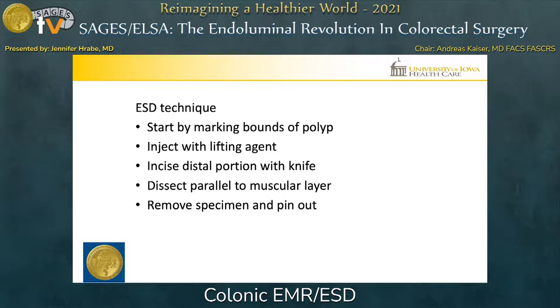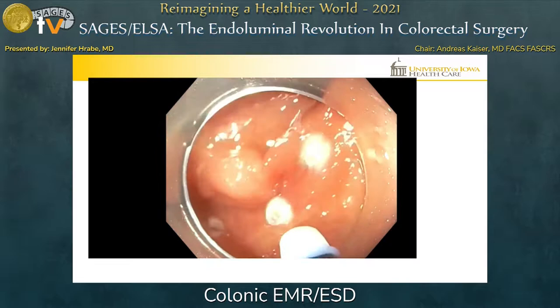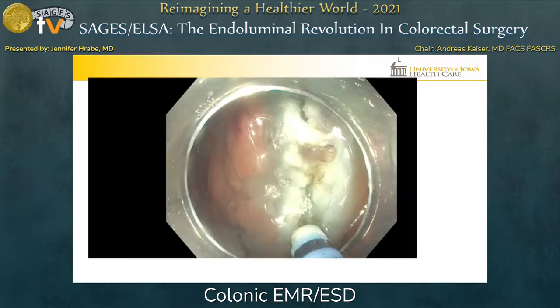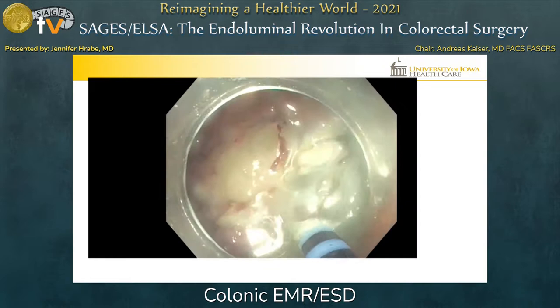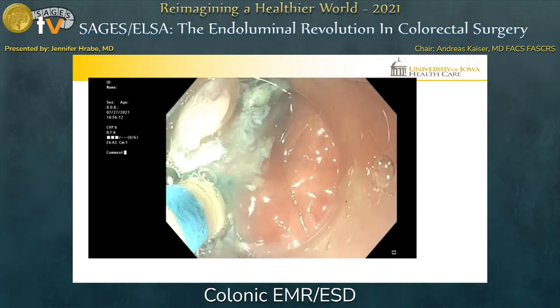This video demonstrates critical portions of the performance of ESD. We start by marking with cautery the bounds of the polyp to be excised. Then the incision is made with the knife, and the dissection continues in the submucosal plane. The distal attachment cap helps provide traction to facilitate the dissection.